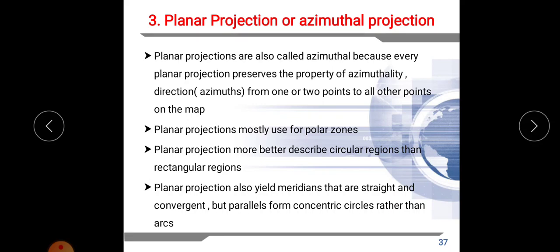The third type is planar projection, also known as azimuthal projection. It is called azimuthal because every planar projection preserves the property of azimuthality — that is, direction from one or two points to all other points on the map. This projection mostly used for polar zones, because we place our planar surface on the pole, which maintains the properties of the polar area at true scale.